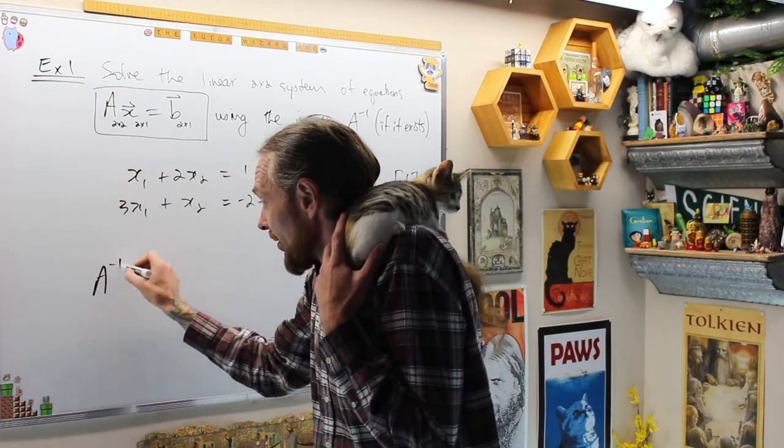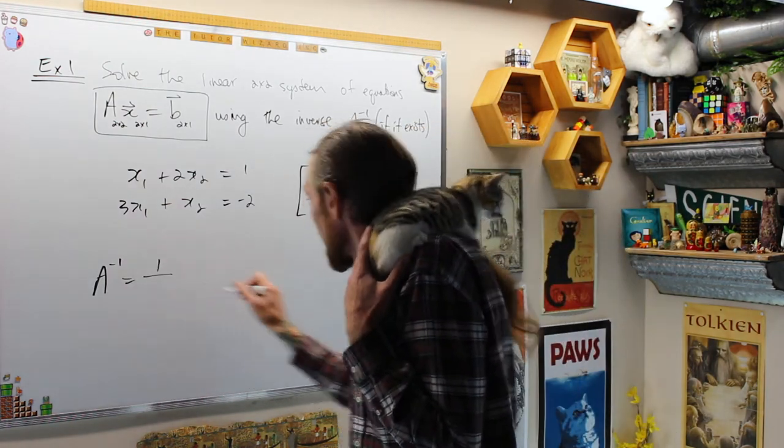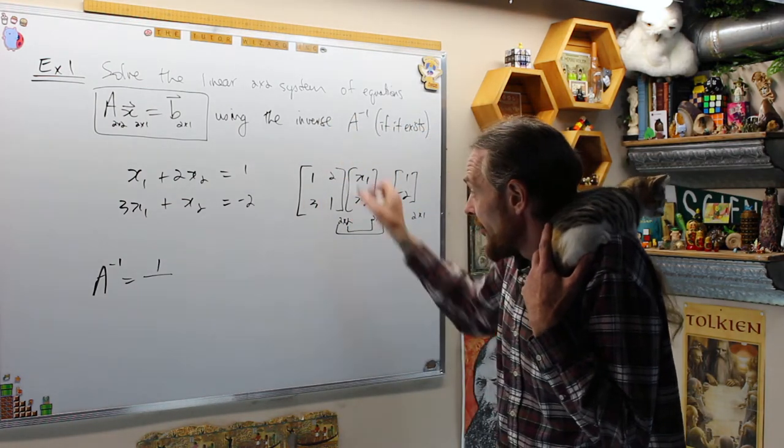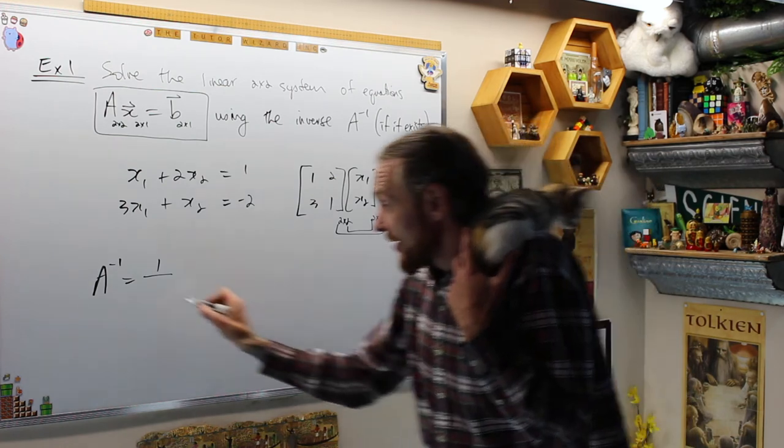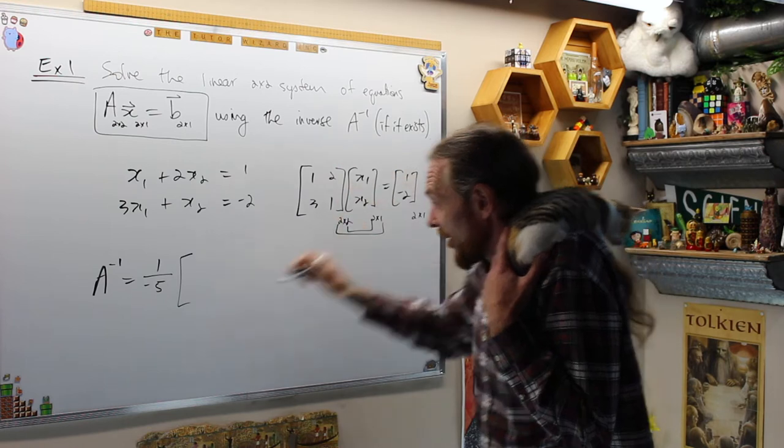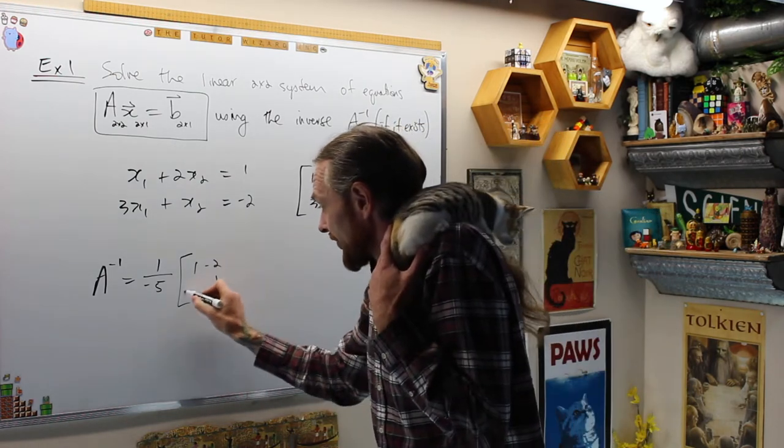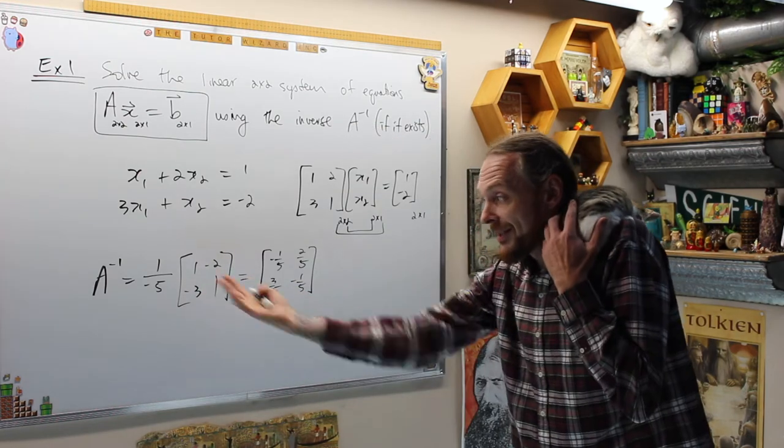What is A inverse? Well, A is [1, 2; 3, 1]. So the inverse is 1 over the determinant which is 1 minus 6 which is negative 5, times - we have this clever formula - flip those. You wanna see me do it again? And then we put negatives on the off diagonals.